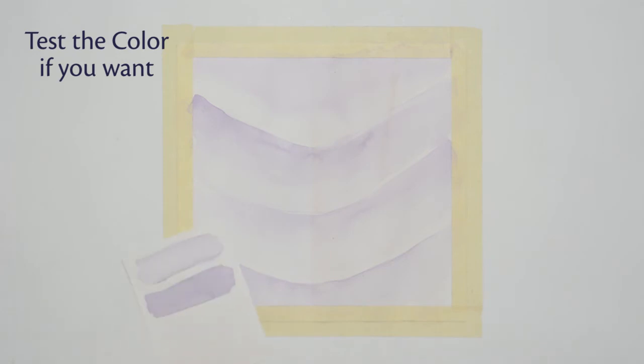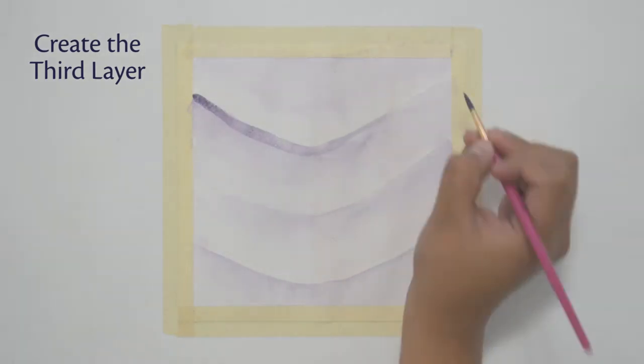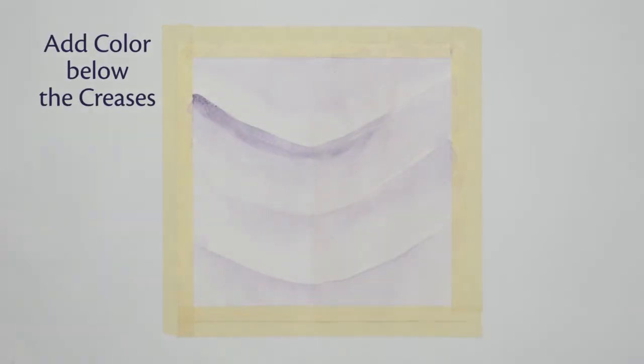Test the color if you want, and add the third layer of color where there is less light, especially below the folds, creases, and where the fabric overlaps. Also, soften the edges with a bit of water.